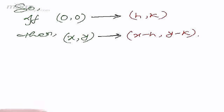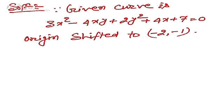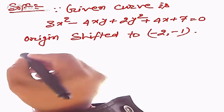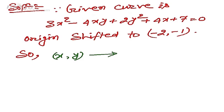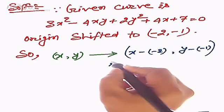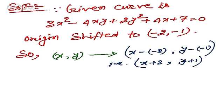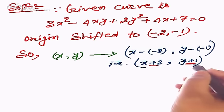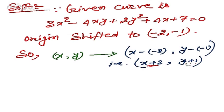To get the equation of the same curve in the new position, we substitute (x, y) with (x - h, y - k), which is (x + 2, y + 1). To get the equation of the curve in the new situation, we need to change x and y accordingly.